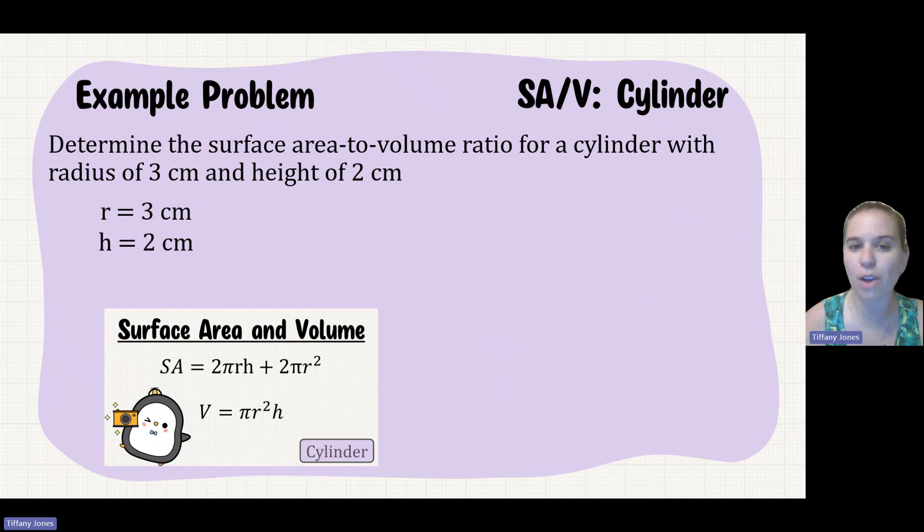If you want to pause the video and try this problem on your own, determine the surface area to volume ratio for a cylinder with a radius of 3 and a height of 2. Yeah, I just switched the numbers. That's OK. So we'll sub it in. We have 2πr being 3 times my height which is 2, plus 2πr being 3 squared.